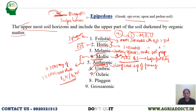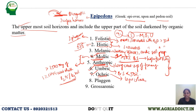Umbric epipedon is also like a mollic epipedon, but the base saturation is different — it is less than 50 percent. This is the main difference between mollic and umbric epipedons. Ocric epipedon is famous for its light color nature. It has less organic matter, usually less than one percent, and that is the ocric epipedon.